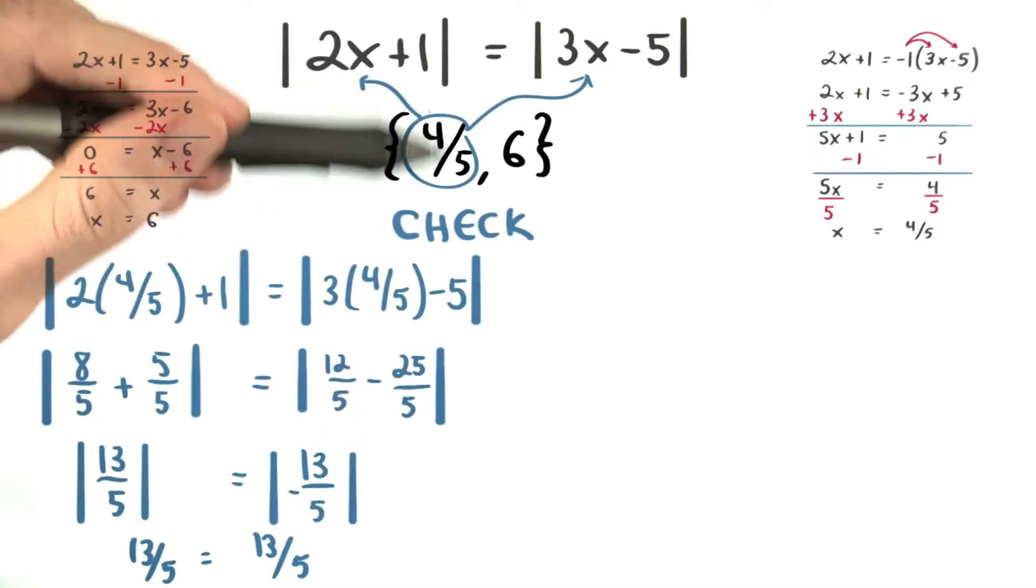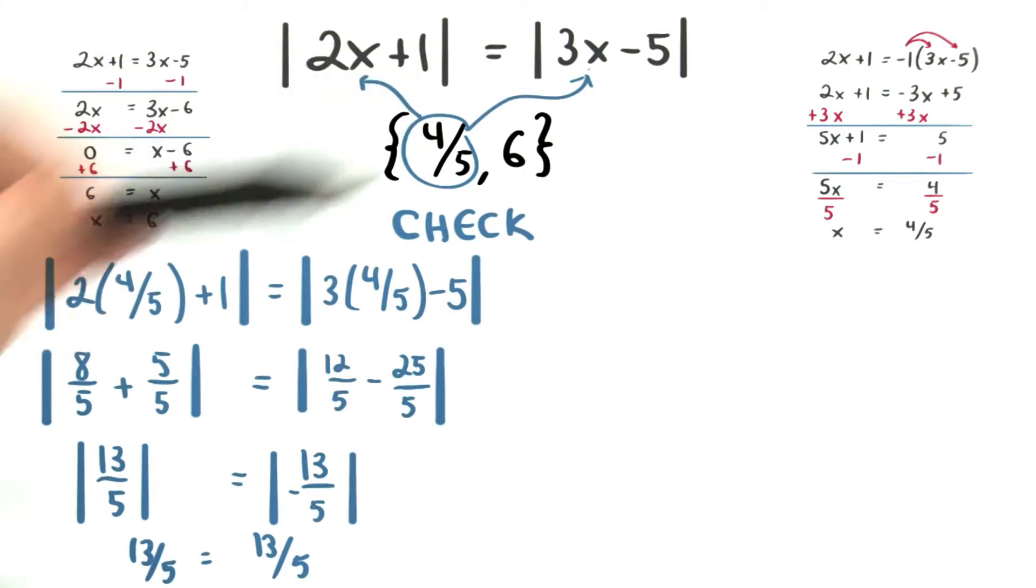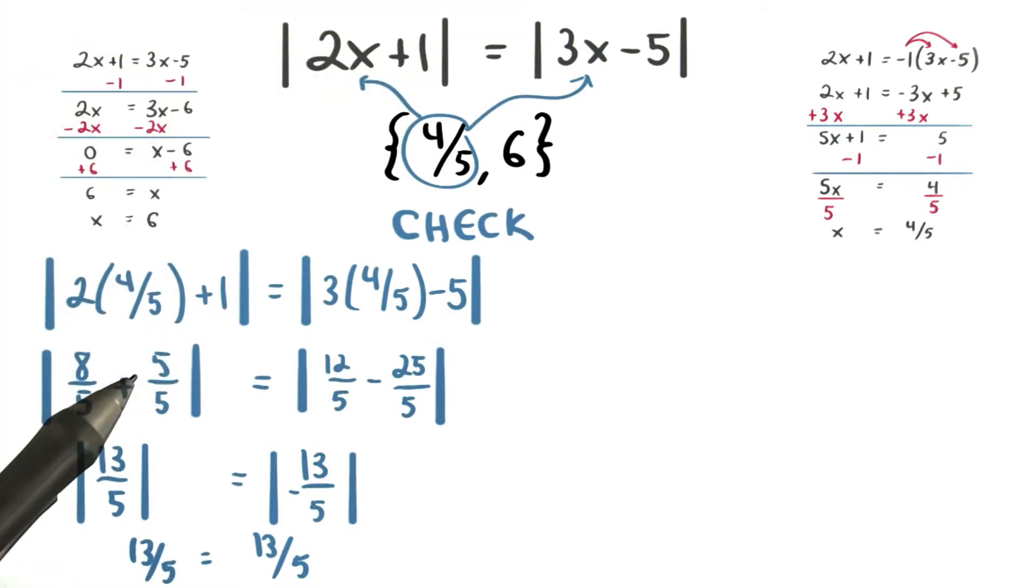We can check this first x value by plugging it in for x. 2 times 4 fifths is 8 fifths. And then I can just change 1 to 5 divided by 5. So this makes 13 fifths on the left side. Notice that I still have absolute value the entire way down my problem. Now I'm going to take the absolute value of this number and I get positive 13 fifths. That's the distance from 0.